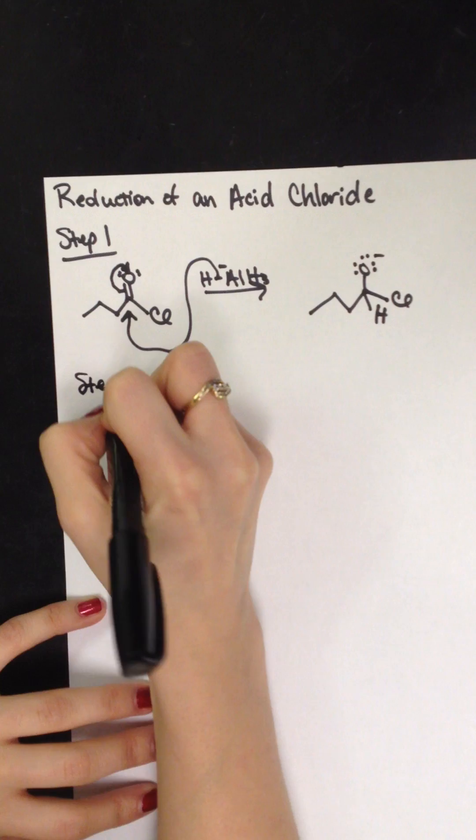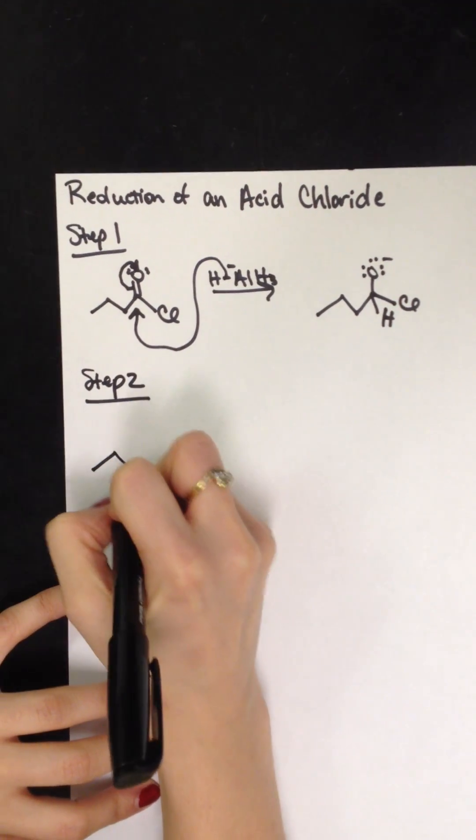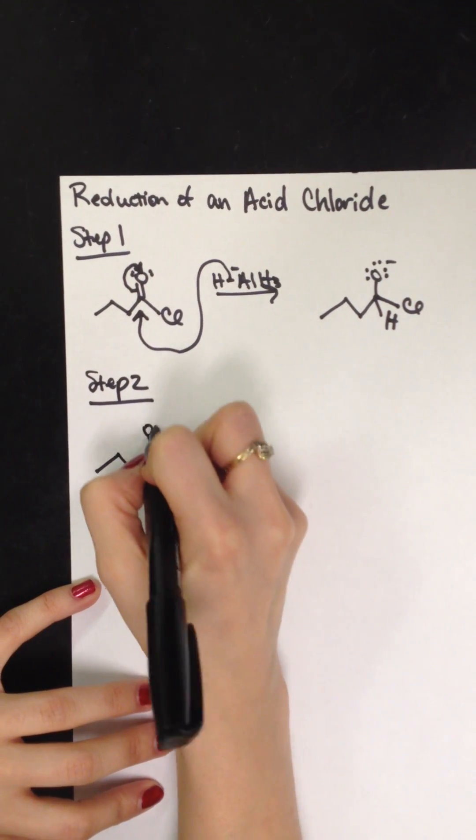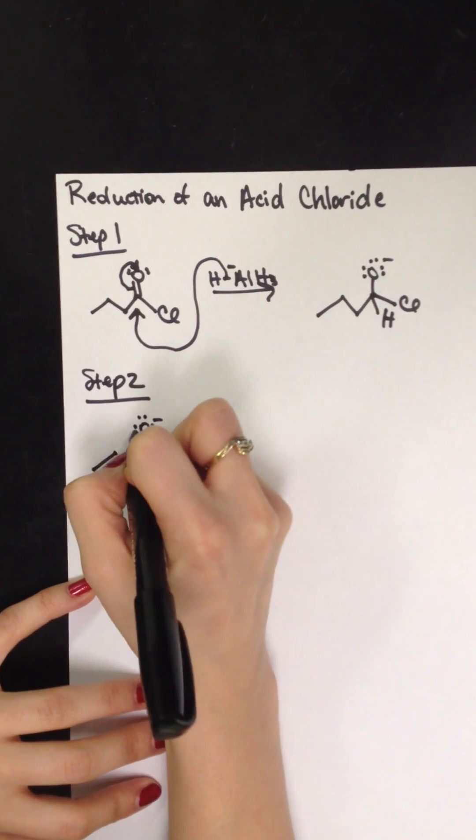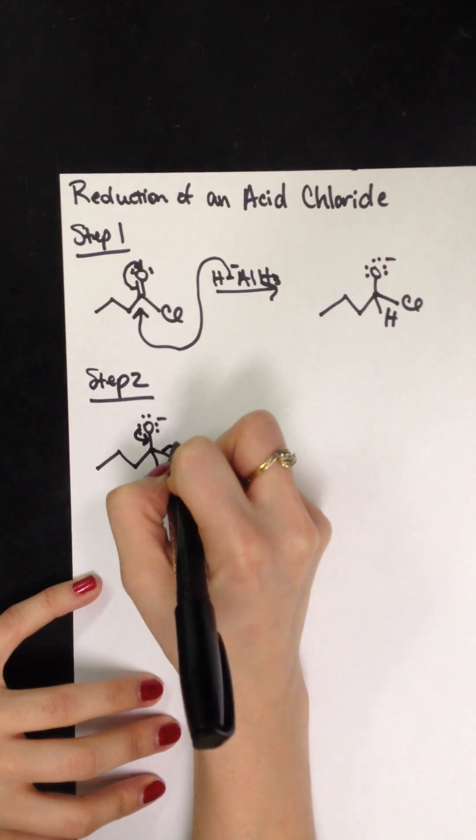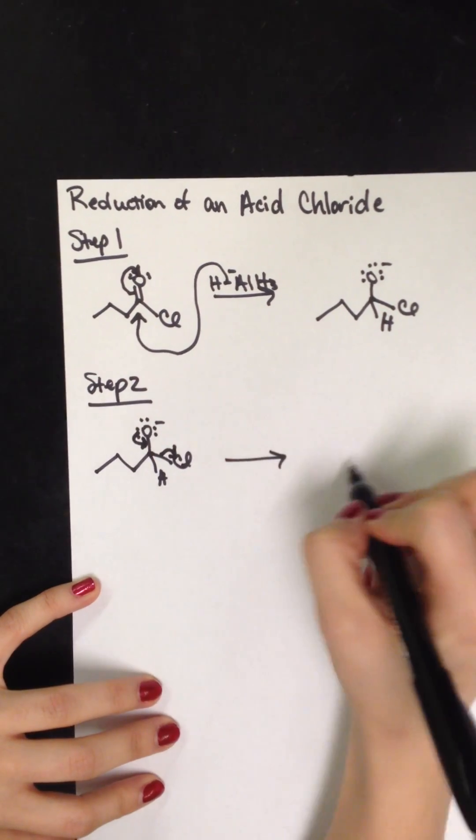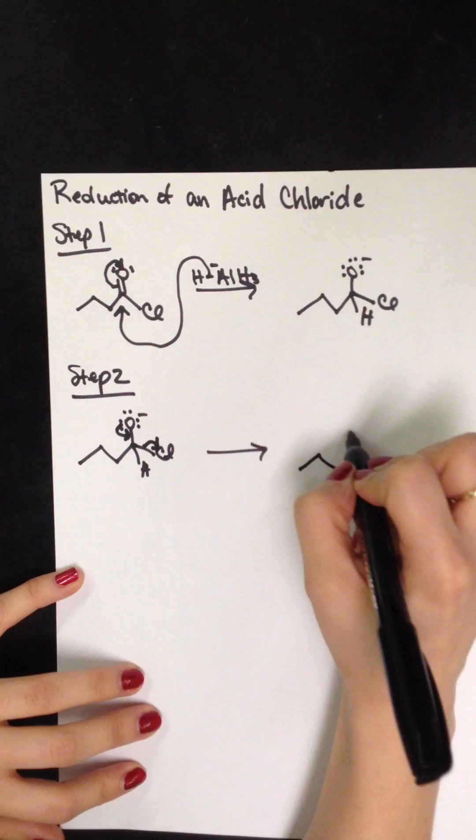Then in step two, this new product that we've just made, with its negative on the oxygen, is going to kick down, reform the pi bond, and kick off the leaving group. This then forms an aldehyde.